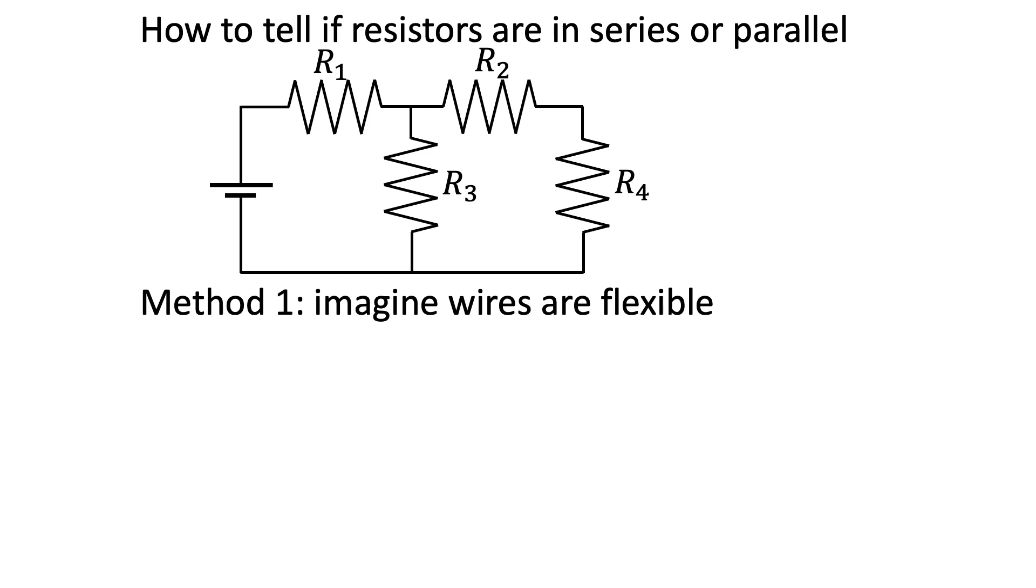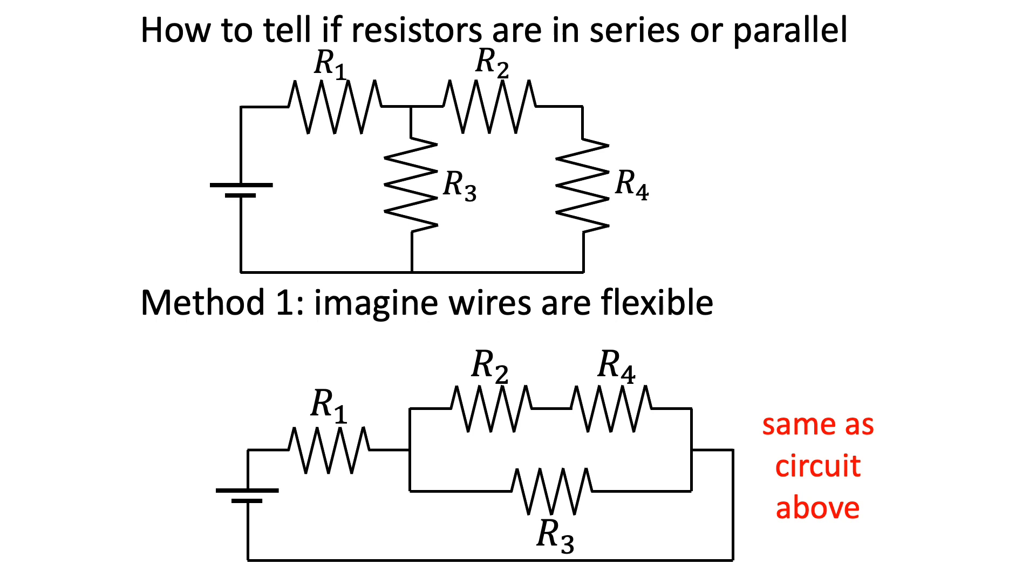In the second diagram, I have rearranged the circuit so that all the resistors are horizontal. This is essentially the same circuit as the one above, but now it is easier to see that R2 and R4 are in parallel.